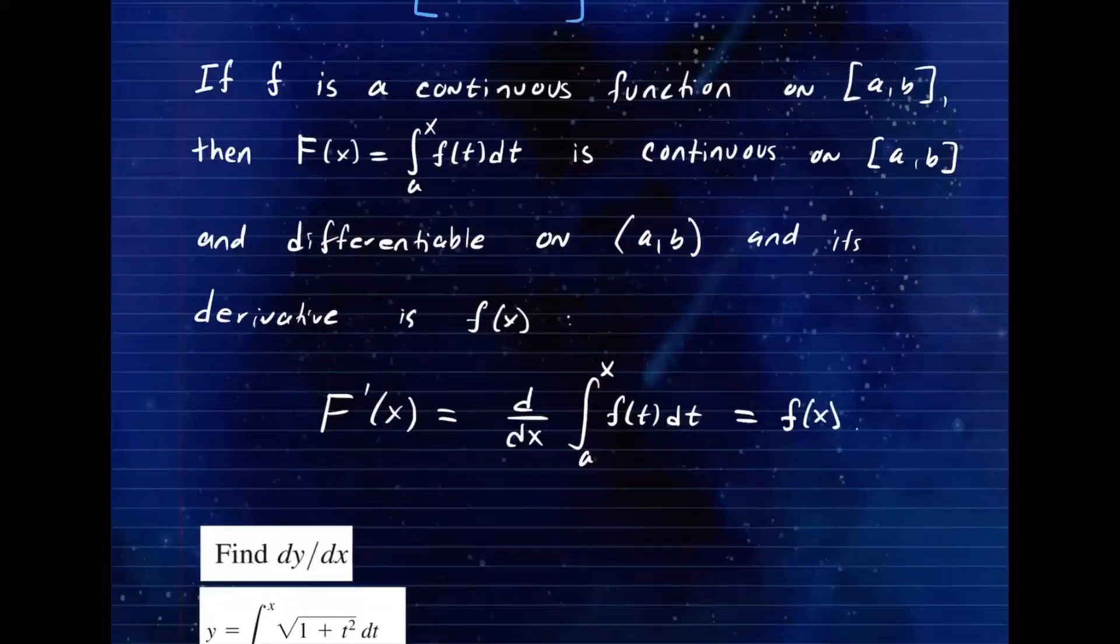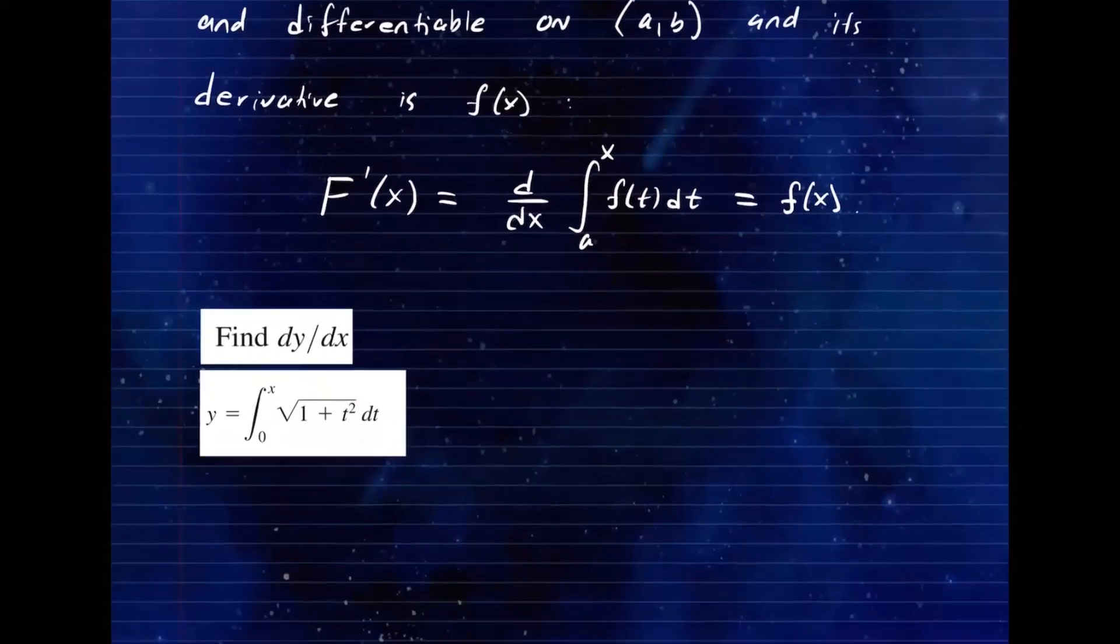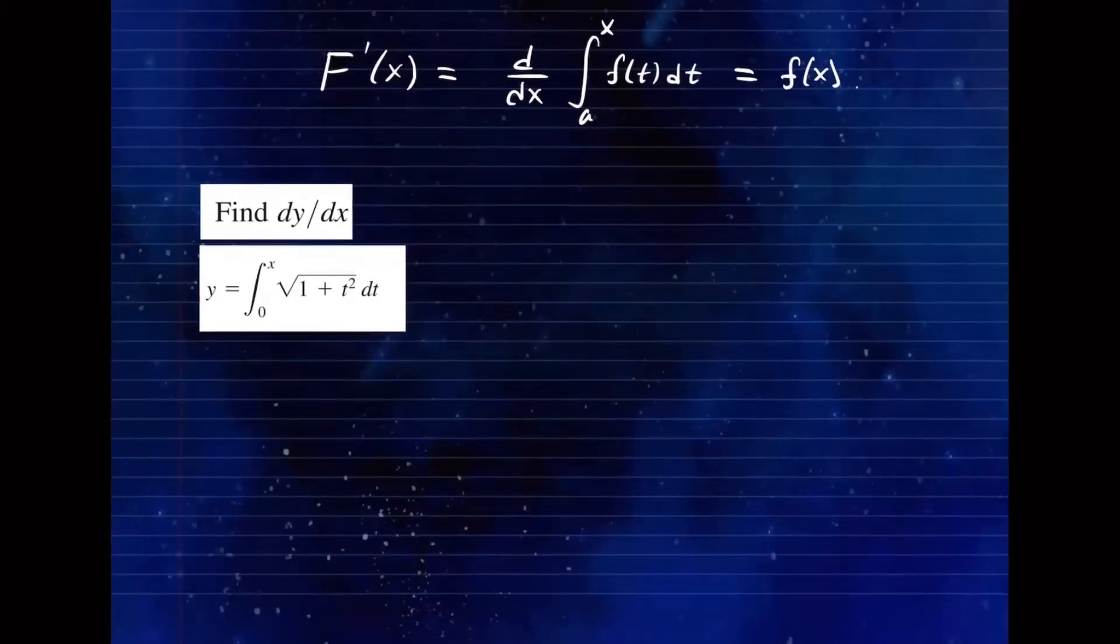Here is our first example. Let's say you want to find the derivative of this function, which is expressed as the integral from 0 to x of the function square root of 1 plus t squared dt. So if you differentiate this function on the left side, you get dy/dx. On the right side, we get the derivative of the integral from 0 to x of this function, 1 plus t squared dt.